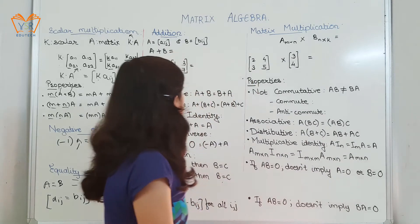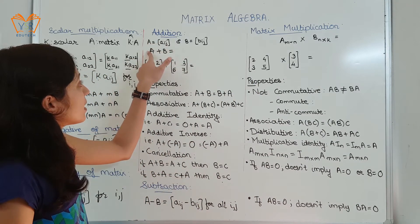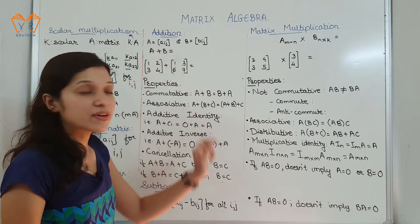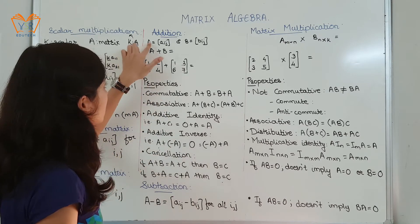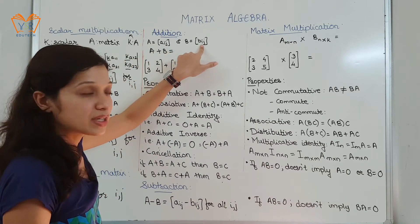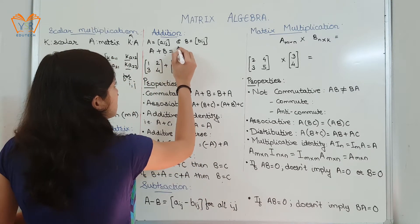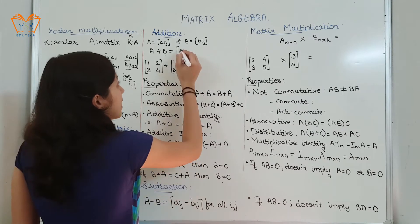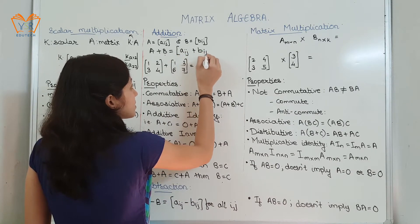Moving forward to addition of matrices: two matrices a and b can be added together only when they are of the same order. That is, let a equal a_ij and b equal b_ij. Addition will take place only when they are of the same order, and element-to-element addition will take place.